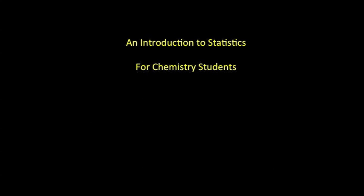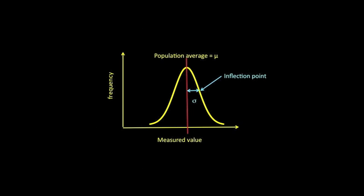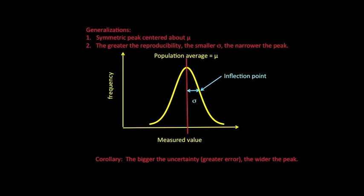In the second lesson on statistics, we discussed the relationship between probability and the normal error curve. Recall that the last time we discussed large populations of measurements, we pointed out that when only random errors are operating, then the data clusters in a bell-shaped fashion around the average value for the population.